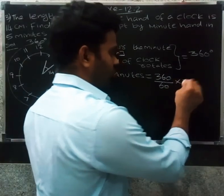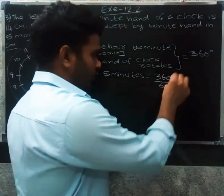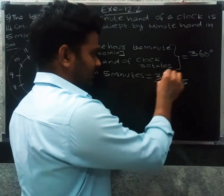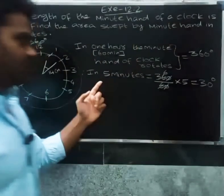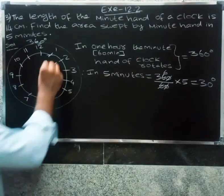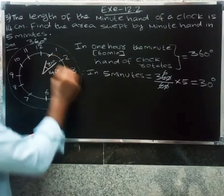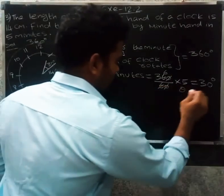Cancel to get 30 degrees. So for 5 minutes, the minute hand of the clock rotates 30 degrees. So theta equals 30 degrees.